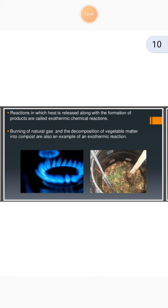Reactions in which heat is released along with the formation of products are called exothermic chemical reactions. The burning of natural gas and the decomposition of vegetable matter into compost are also examples of exothermic reactions. When we burn natural gas and vegetable matter like vegetable peels and fruit peels, it is the best example of an exothermic reaction.